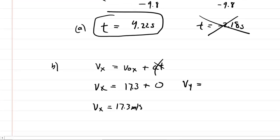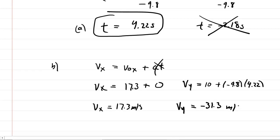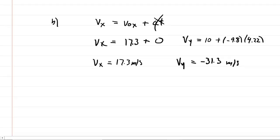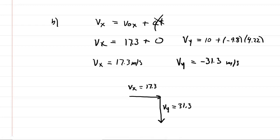For the y direction, the initial velocity was 10 meters per second plus the acceleration of negative 9.8 multiplied by 4.22 seconds. Processing this gives a final velocity in the y direction of negative 31.3 meters per second. To find the overall final speed, we draw a right triangle: the x-component vector points right at 17.3, and the y-component vector points downward with magnitude 31.3. The resultant of these two is the final speed.